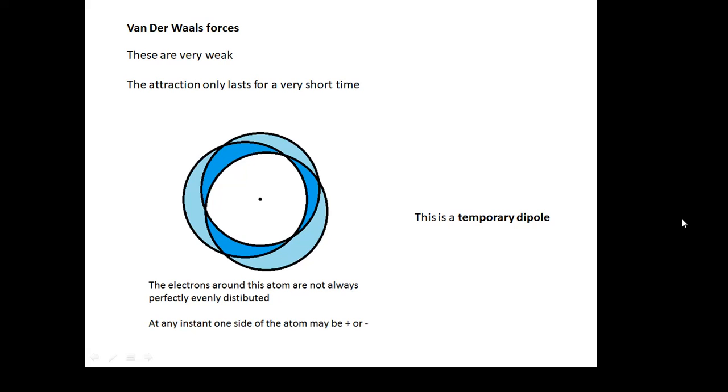It might not last for very long. But while it's there, then this atom or molecule has a positive end and a negative end. A temporary dipole.